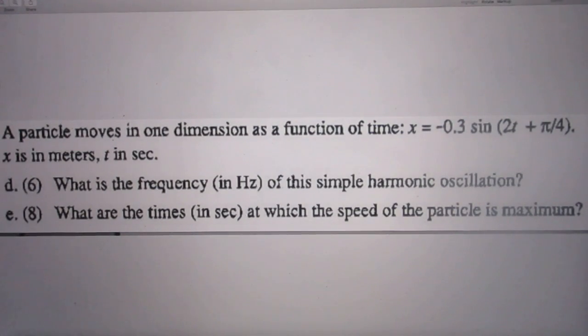Next two questions. A particle moves in one dimension as a function of time. X equals minus 0.3 times the sine of 2T plus pi over 4. X is in meters, T in seconds.